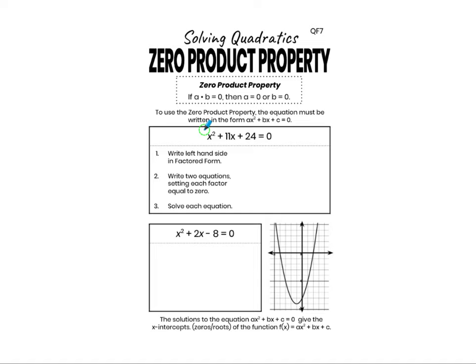The zero product property states that if a times b equals zero, then a equals zero or b equals zero. So for multiplying two factors a and b, if their product is zero, then at least one of those factors must equal zero. An important part of this property is making sure that we are looking at an equation that equals zero. In order to use the zero product property to say that one of the factors is zero, the equation itself must equal zero. If we did not have equals zero on one side of our equation, we would need to transform it so that we did.